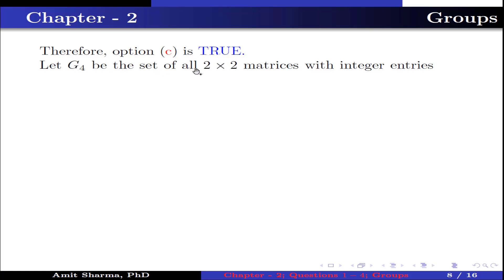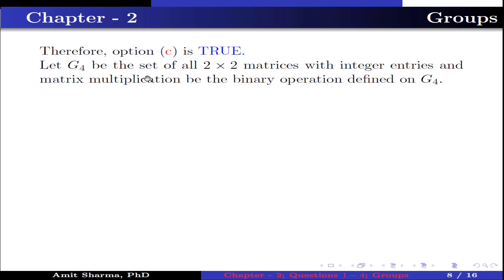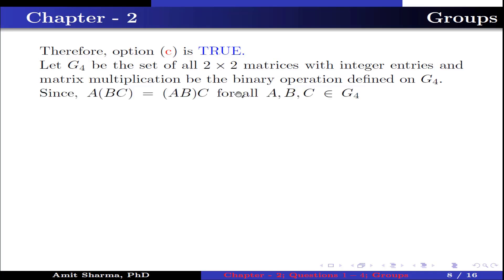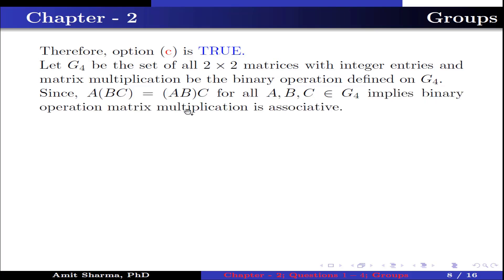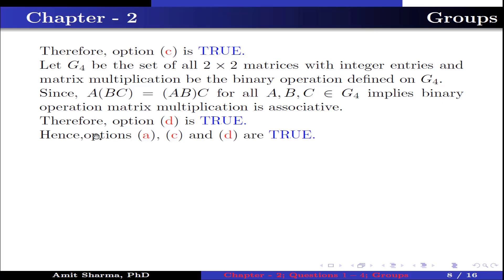Let G4 be the set of all 2×2 matrices with integer entries and matrix multiplication be the binary operation defined on G4. Since A(BC) = (AB)C for all A, B, C belonging to G4, this implies binary operation matrix multiplication is associative. Therefore option D is true. Hence options A, C and D are true.